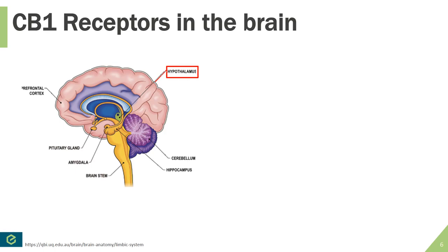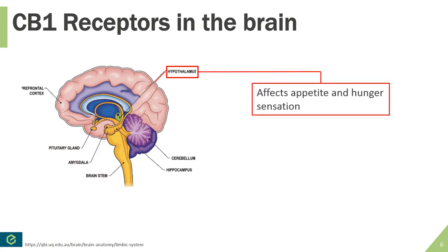The first brain region we'll talk about is the hypothalamus, seen here in the central mid-portion of the brain. The hypothalamus has many important functions, but when it comes to the endocannabinoid system, one of the big ones is its effect on hunger and appetite. When you have activation of the endocannabinoid system, you will feel hungrier and have a stronger appetite. This is common across all cannabinoids, with THC being the strongest, but you will see these effects with CBD as well.